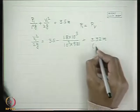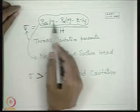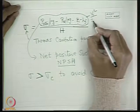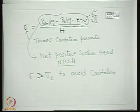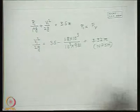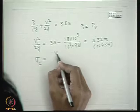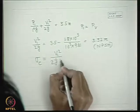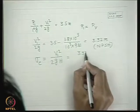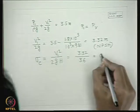This value of V₁²/(2g) = 3.32 meters is the Net Positive Suction Head (NPSH). The critical cavitation parameter σ_c = (V₁²/2g) / H = 3.32 / 36 = 0.092.